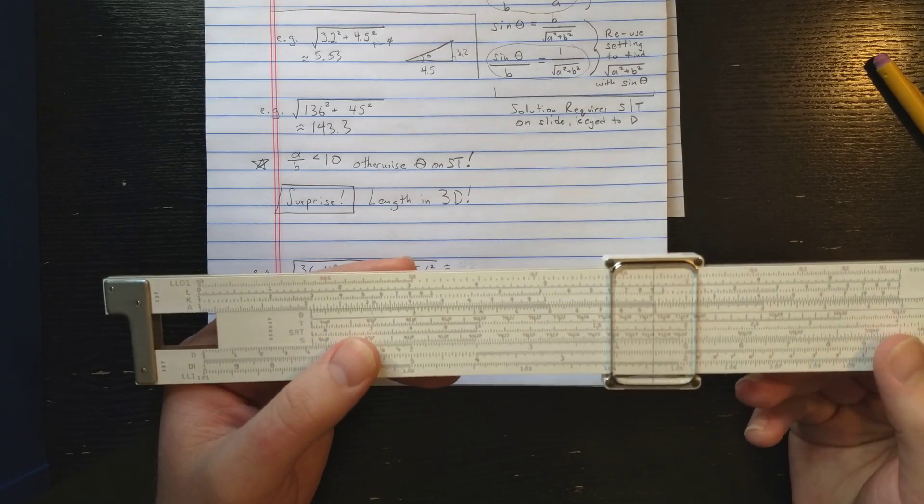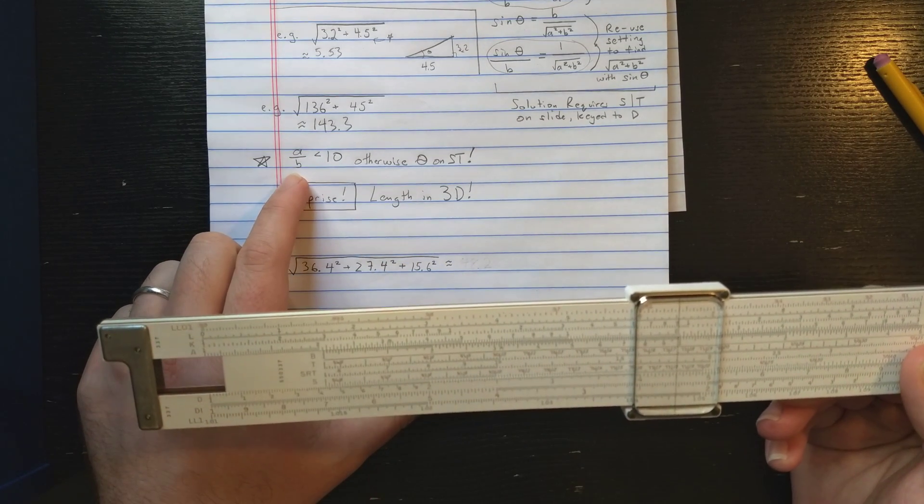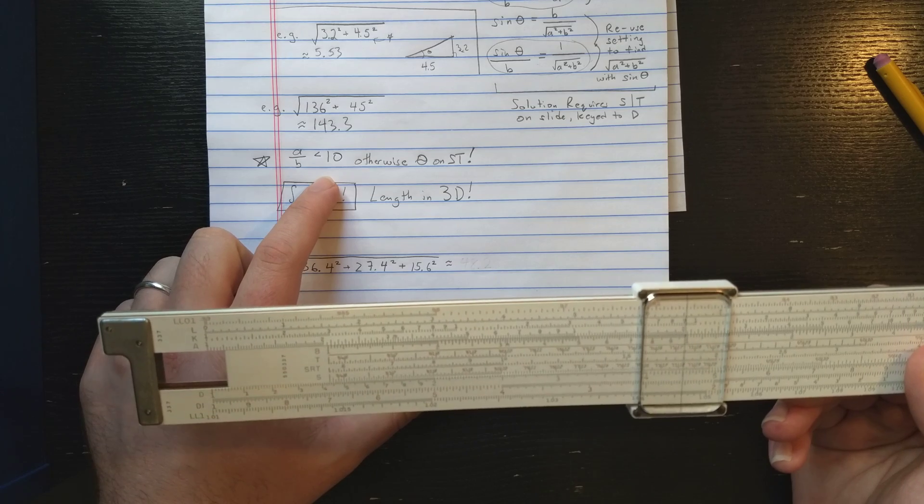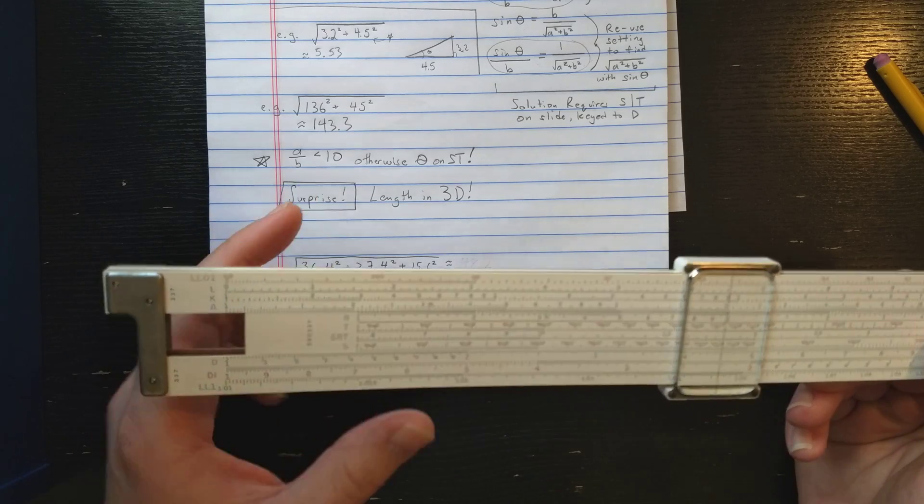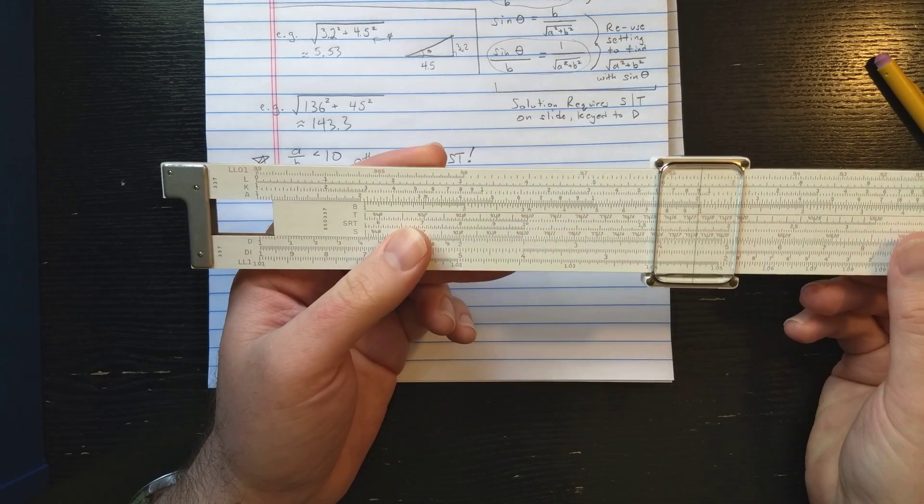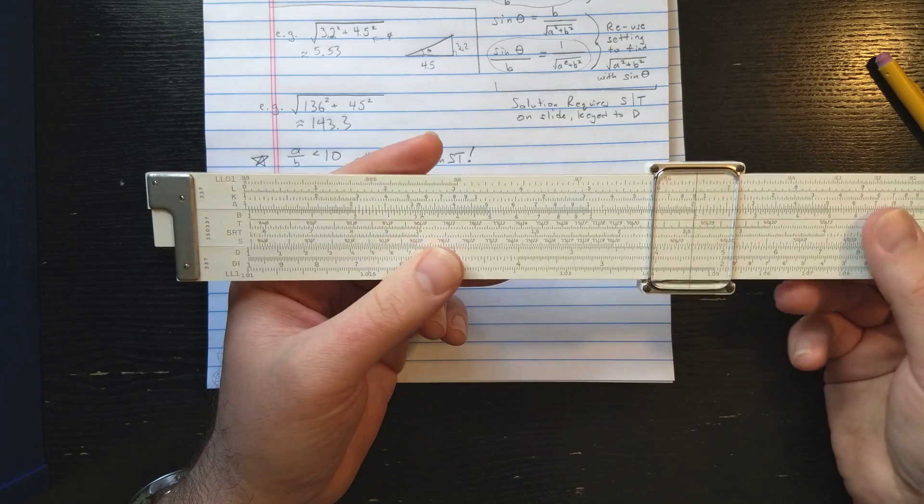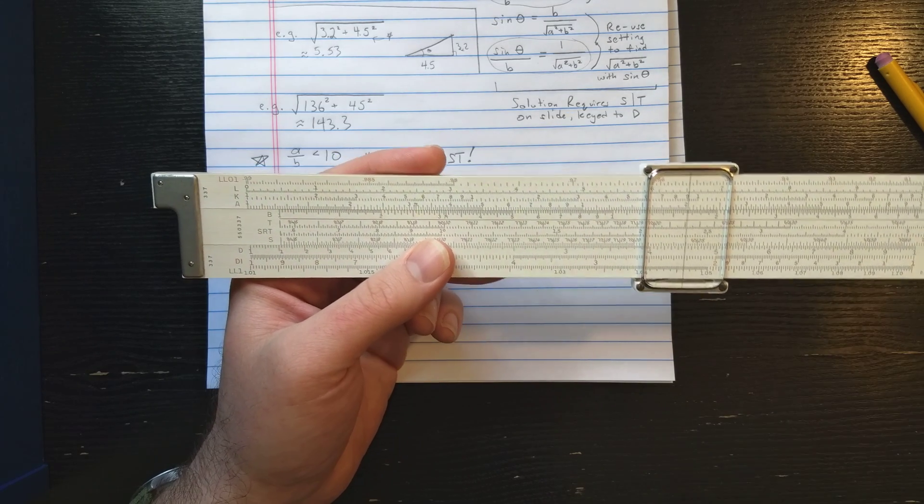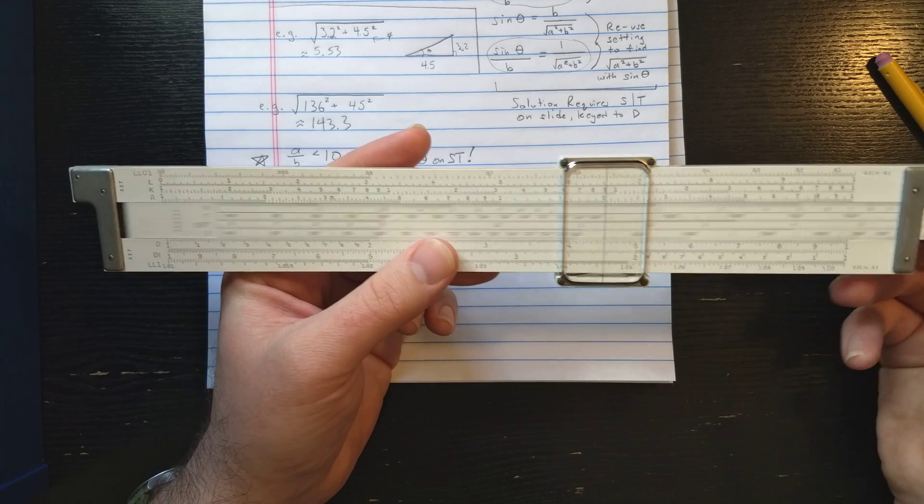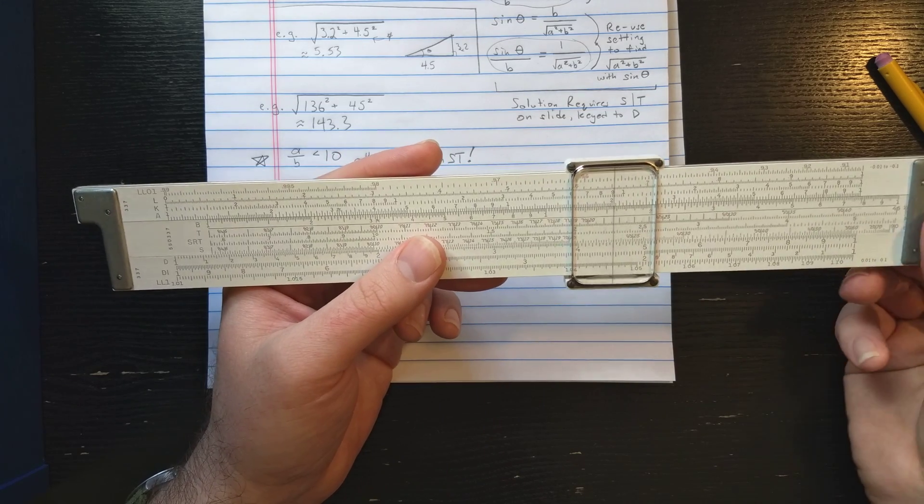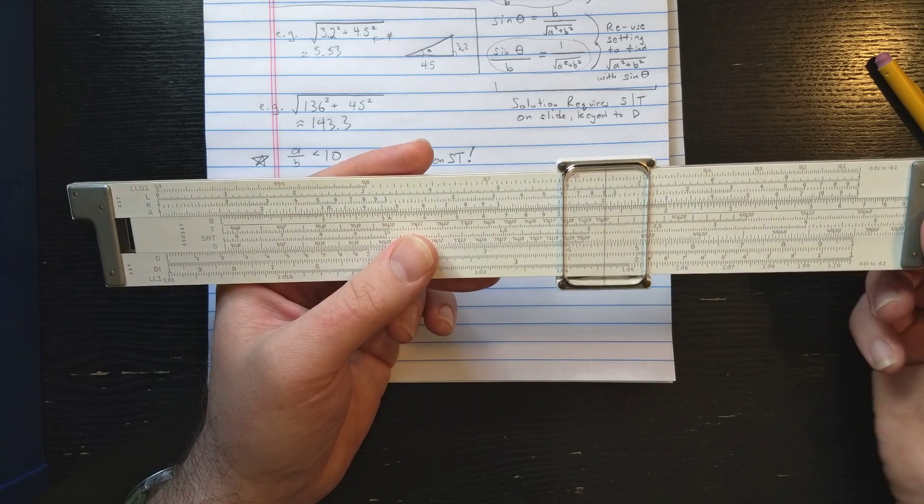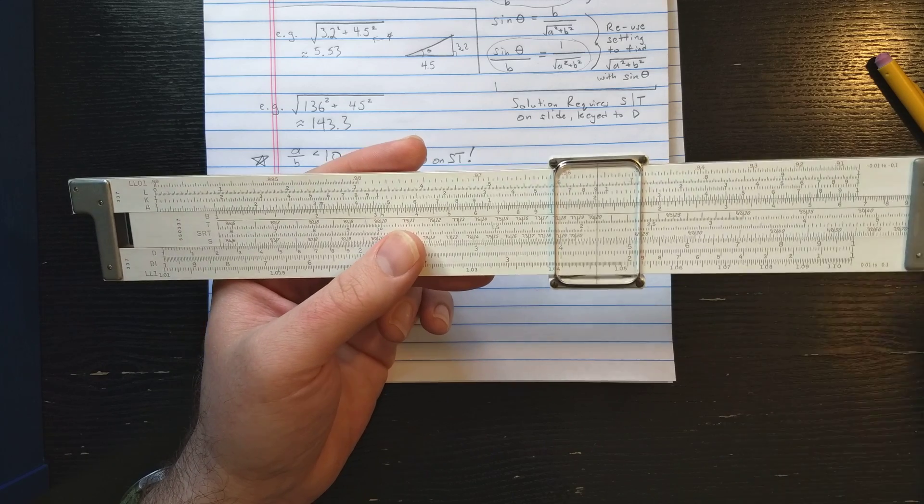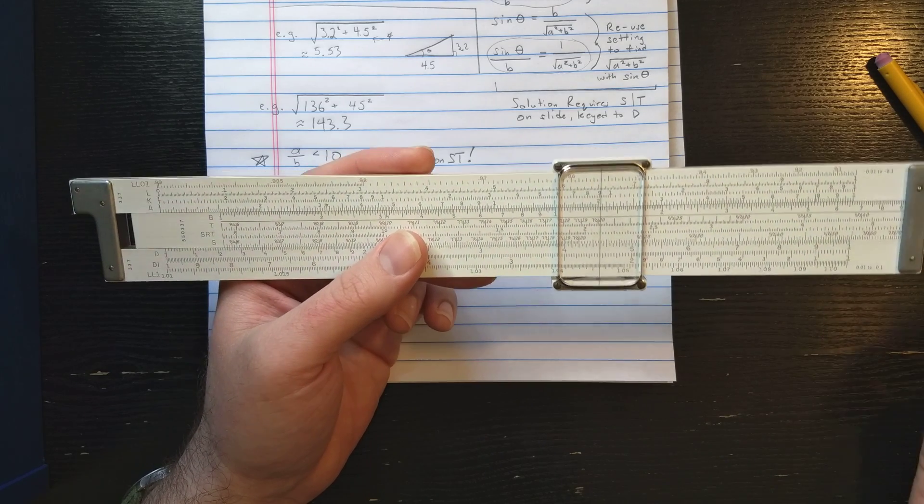Now important thing to remember when doing this is that the ratio of A to B should be less than 10. If that ratio is greater than 10, then you're going to end up falling on the S T or SRT scale. But you'll realize that on the slide roll, that scale is used for both S and T. So when you try to transfer the moving the slide step, moving that from the S scale to the T scale is going to be a non-movement because you're using the same scale for both.